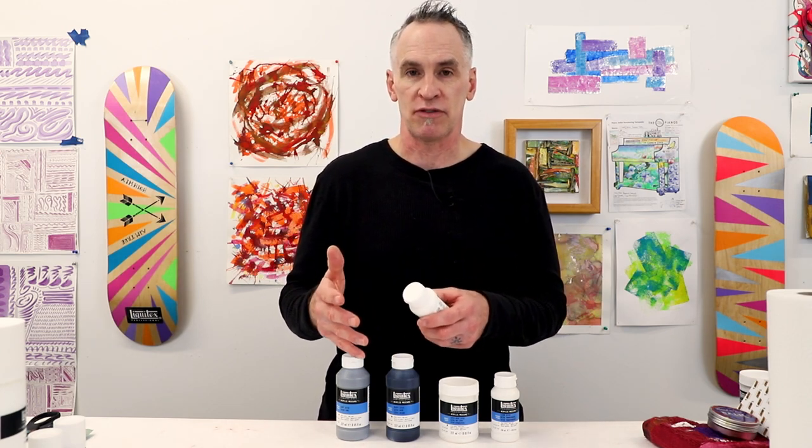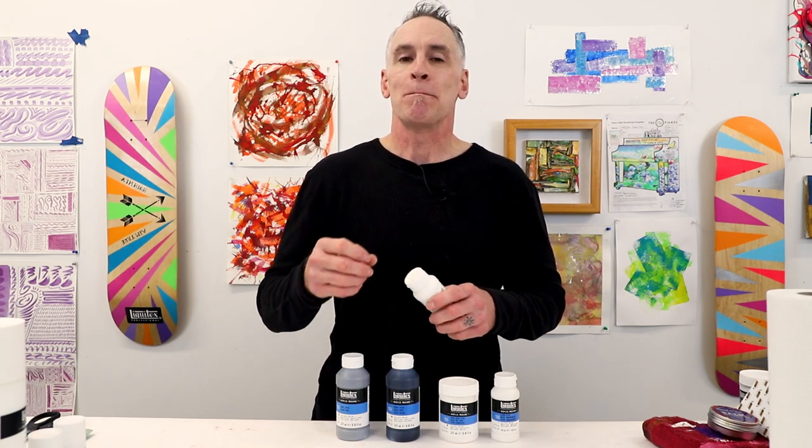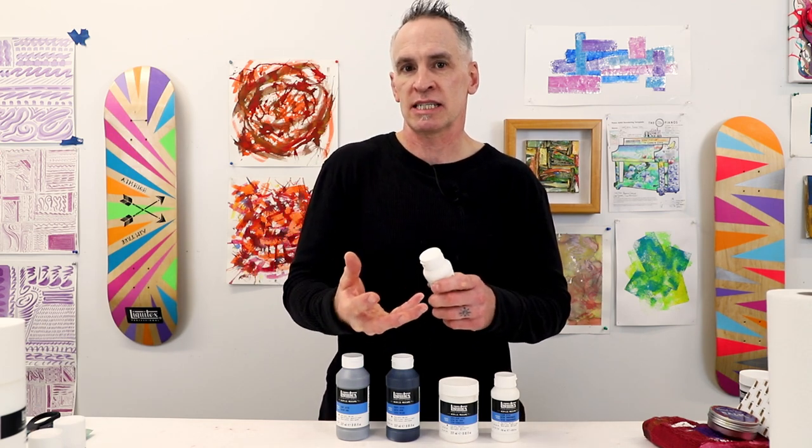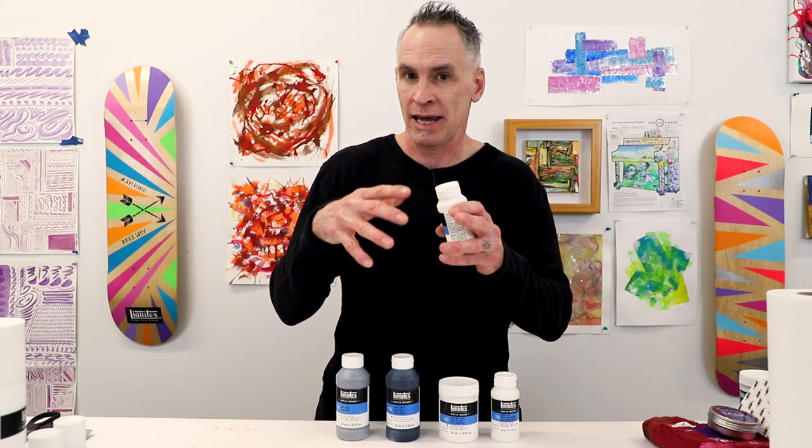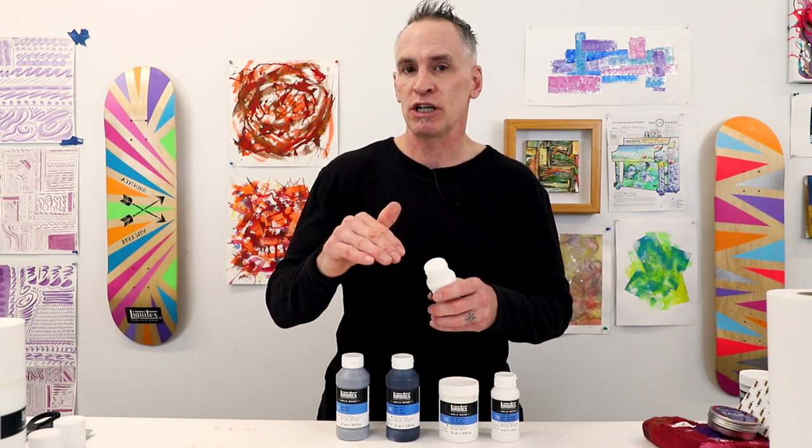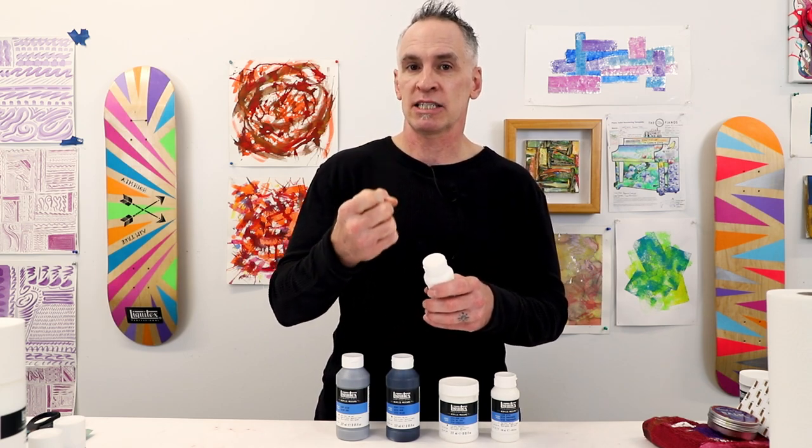With acrylics, you can work on an unprimed surface—there's no problem doing that—but it's going to stain the surface and the color is going to sink in, giving it more of an ethereal look. If you put gesso on there, your paint is going to sit on top of the surface more and look more saturated.